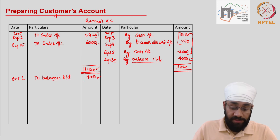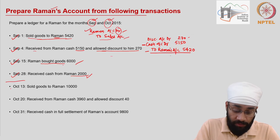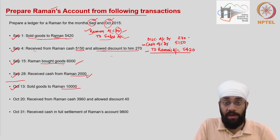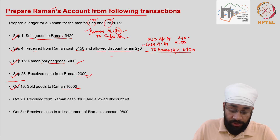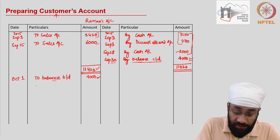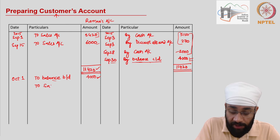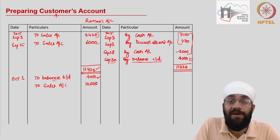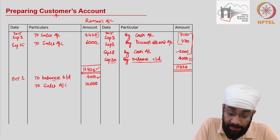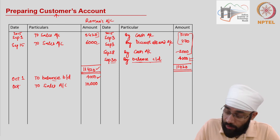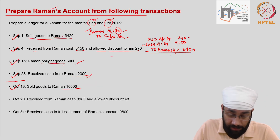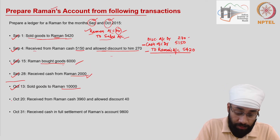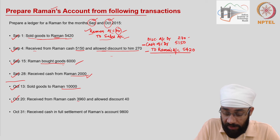Now let's look at transactions in the month of October. In October, you again sell goods to Raman for 10,000. Whenever I sell goods to my customer, the entry happens on the debit side, so I write 'To Sales Account' 10,000. Now there is 14,000 to be recovered from Raman. This happened on October 13th.